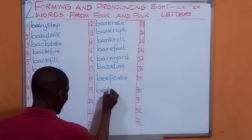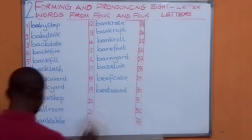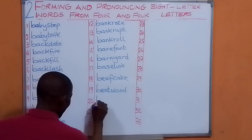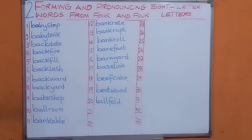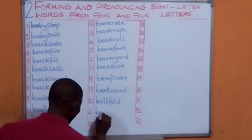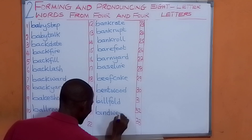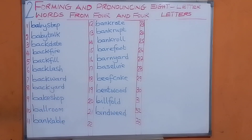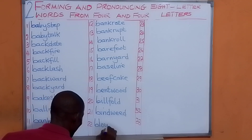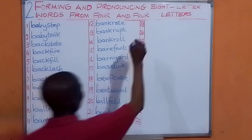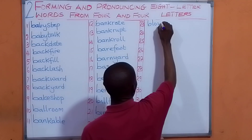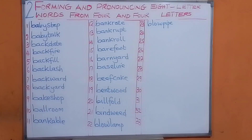Let's have bent and wood. We have bentwood. Let us have bear and fold. We have bearfold. Let's have bind and weed. That is bindweed. Let's have blow and lamp. We have blowlamp. Let us have blow and pipe. We have blowpipe.